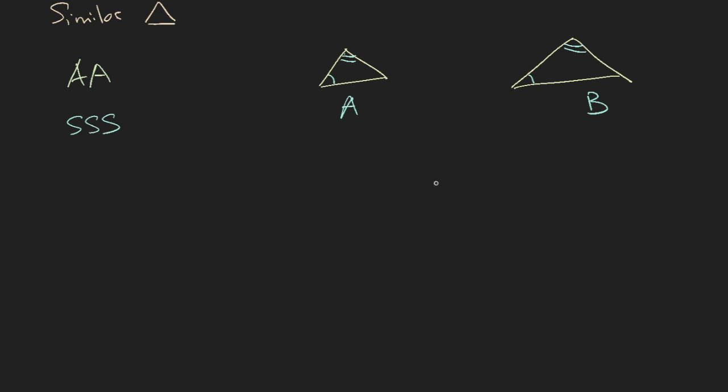So the ratio of the sides A, B, and C, if it is equal to the sides D, E, and F, or the ratio D, E, and F, then the triangles are similar.